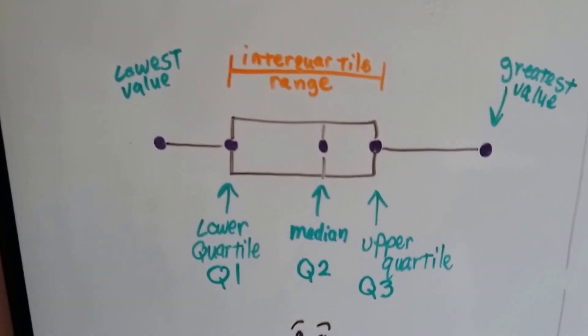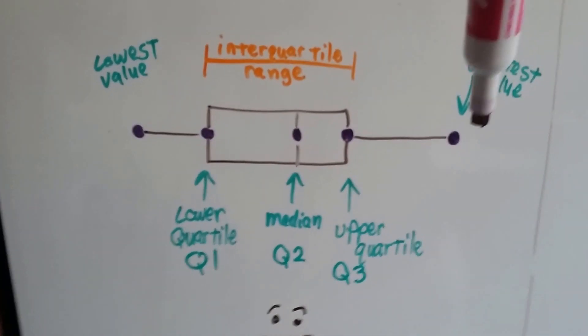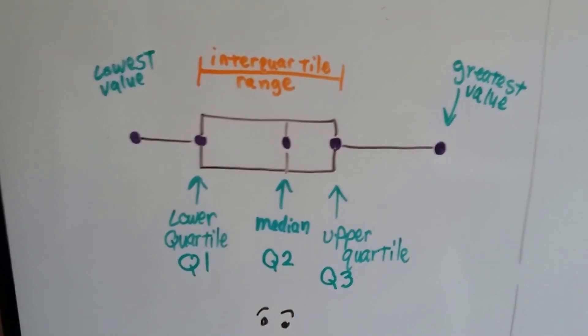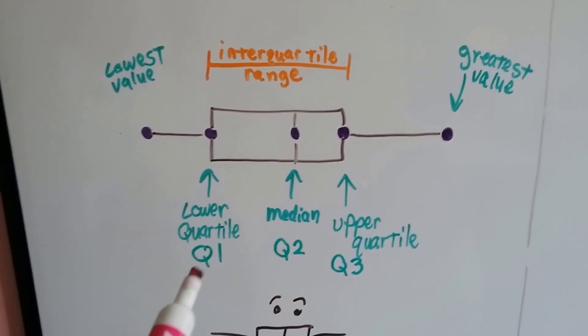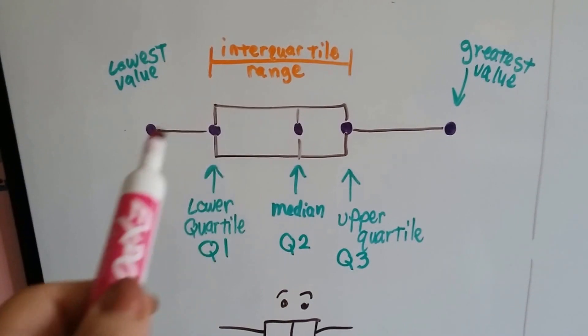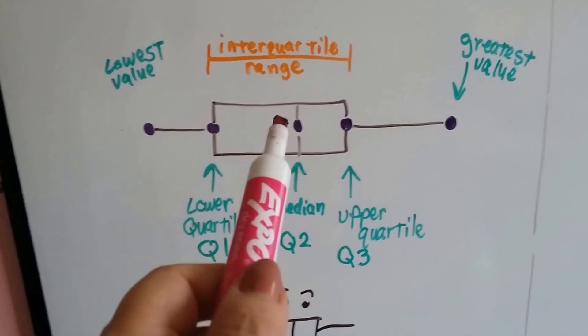For a box and whisker plot, we've got our lowest value here on the left and our greatest value here on the right. The size of the box is called the interquartile range. The median is right in the center. The lower quartile, Q1, is the average number between the median and the lowest value. It's the average of the lowest half of the numbers.